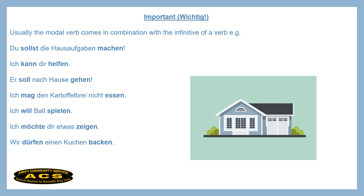You could say 'Ich möchte ein Bier bestellen,' and then you would have your infinitive verb 'bestellen' after your modal verb 'möchte.' But you don't have to — you can skip it in this case. And the last sentence: 'Wir dürfen einen Kuchen backen' — we are allowed to bake a cake.